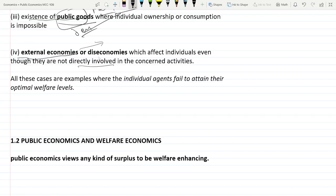Like education has positive externality and pollution in a factory has negative externality. So government needs to take care of all these things. Private market won't take care. So in all these scenarios any individual agent fails to attain their maximum optimal welfare level without the interference of government.